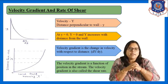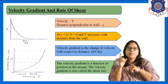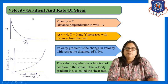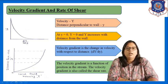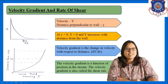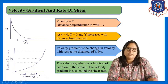To understand velocity gradient and rate of shear, the notation used here is: capital Y for velocity and small y for distance perpendicular to the wall. The expression dY/dy represents the velocity gradient. This is the graph of distance perpendicular to wall versus velocity gradient, showing the nature visible in the graph.